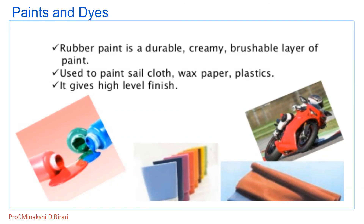Rubber paint is a durable, creamy, brushable layer of paint which is used to paint sailcloth, wax paper, and plastics, and it also gives a high-level finish. So one application of rubber is in paints, and it is also used as a dye.